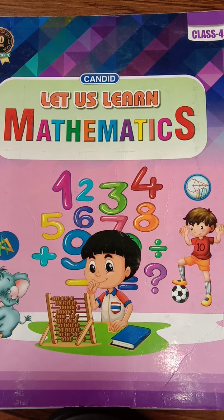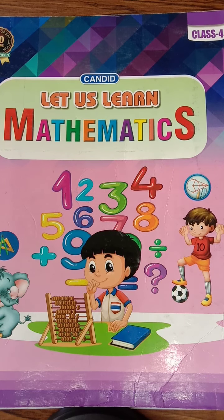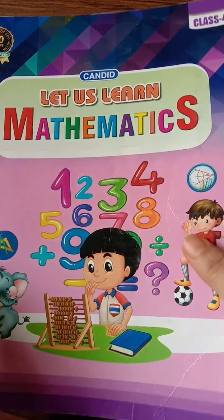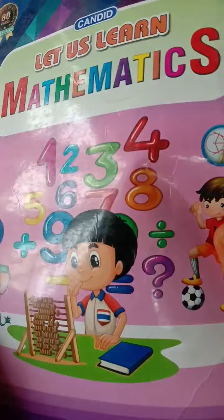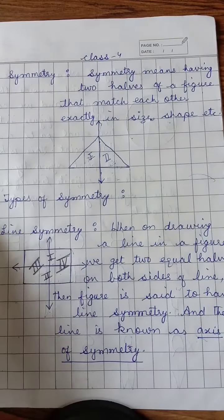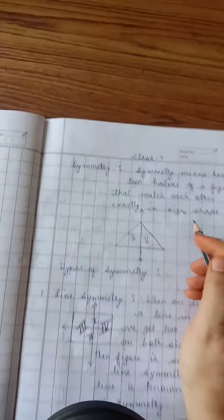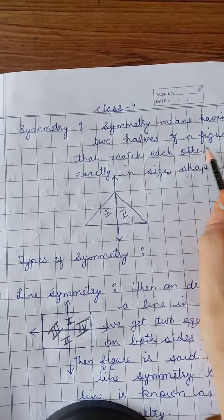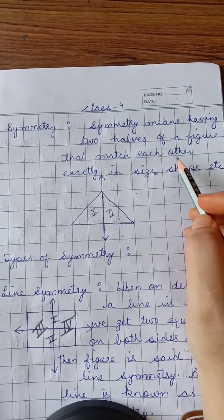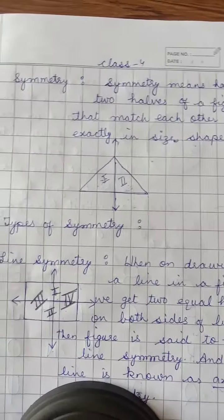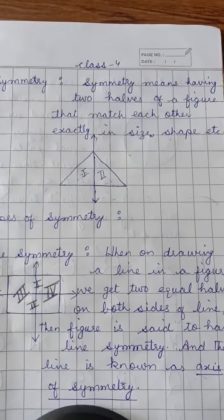Welcome back students. In this video we will do the next topic of chapter 11, geometrical shapes, and that topic is symmetry. It is a little bit new topic for you. Symmetry means having two halves of the figure that match each other — the state of having two halves such that the two halves are exactly the same in size, shape, etc.